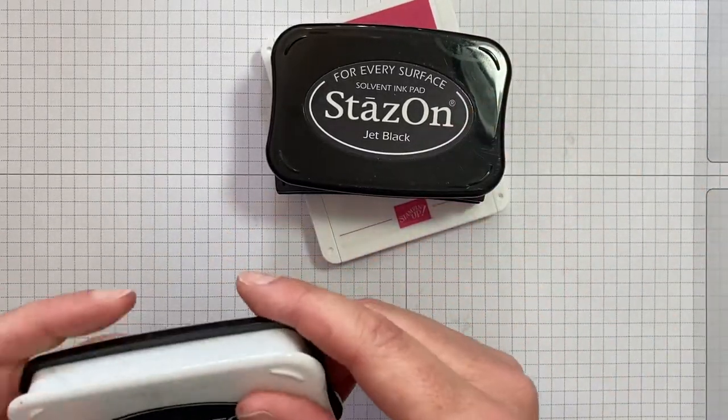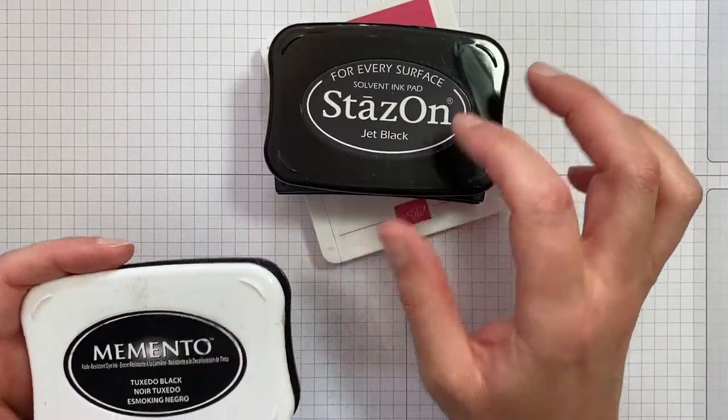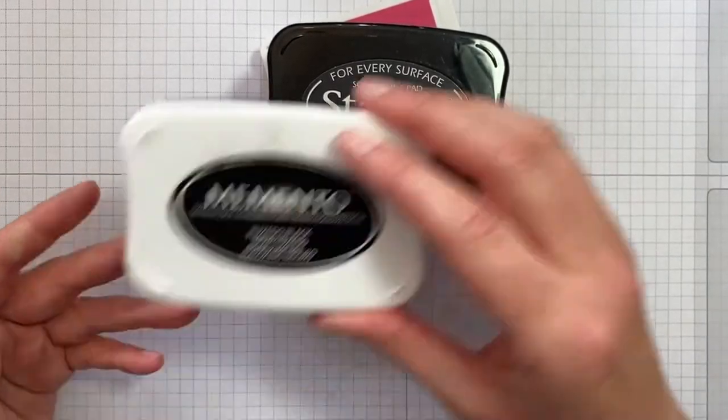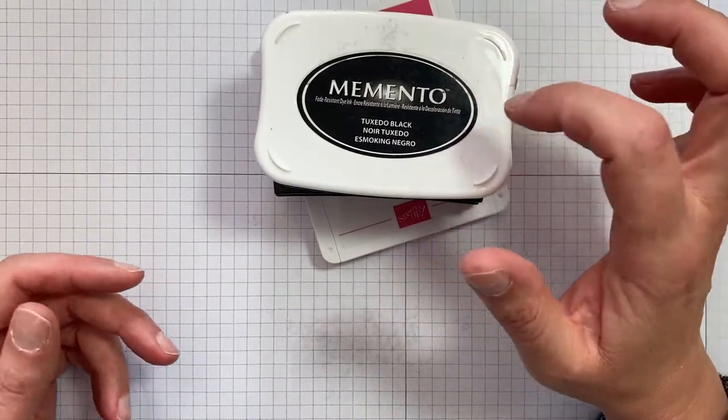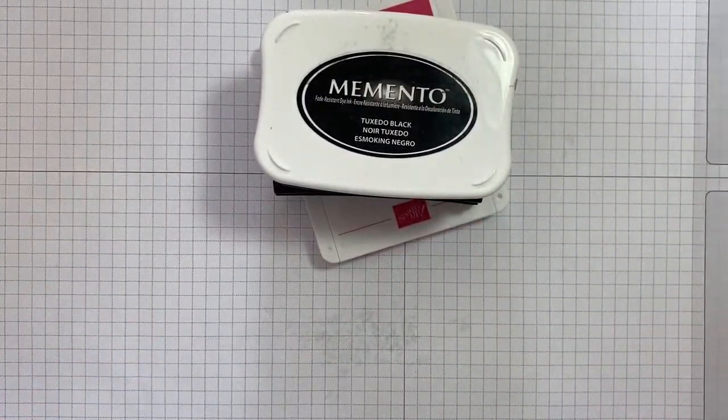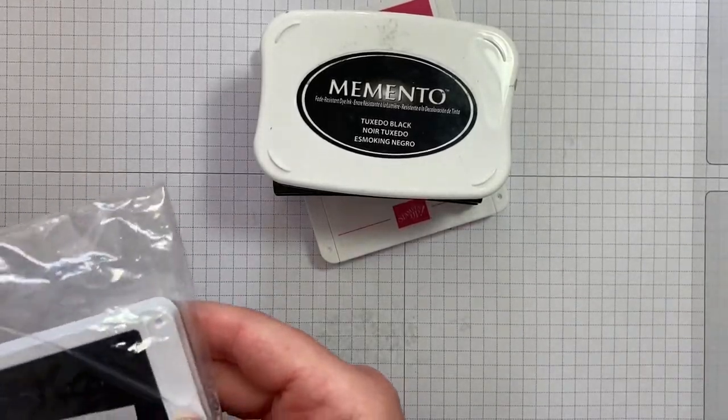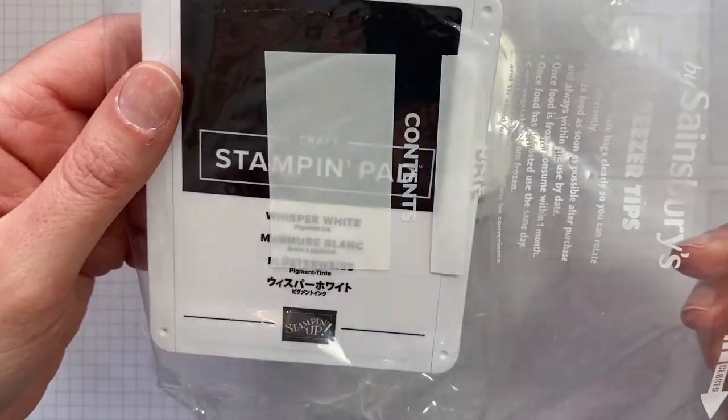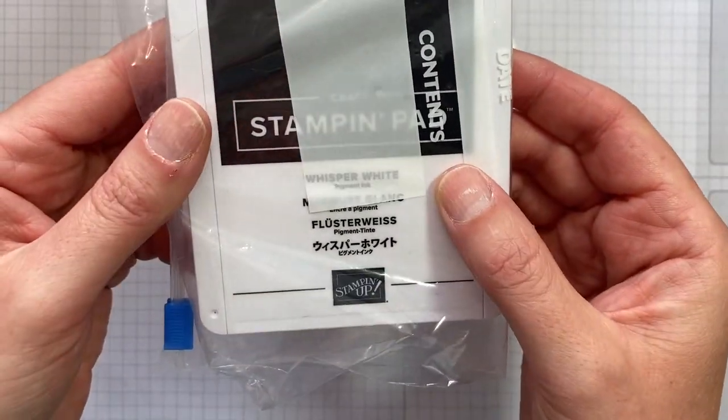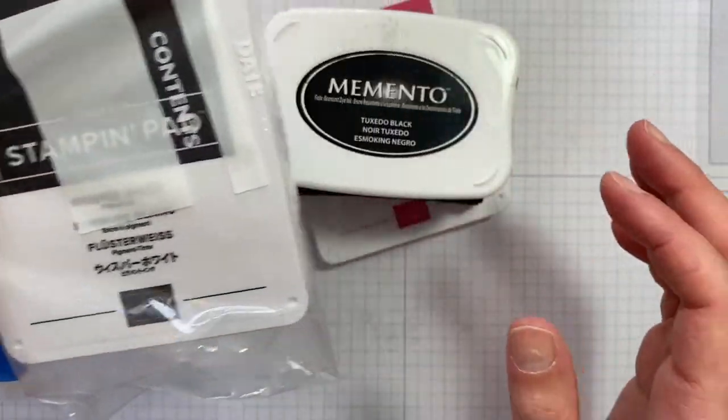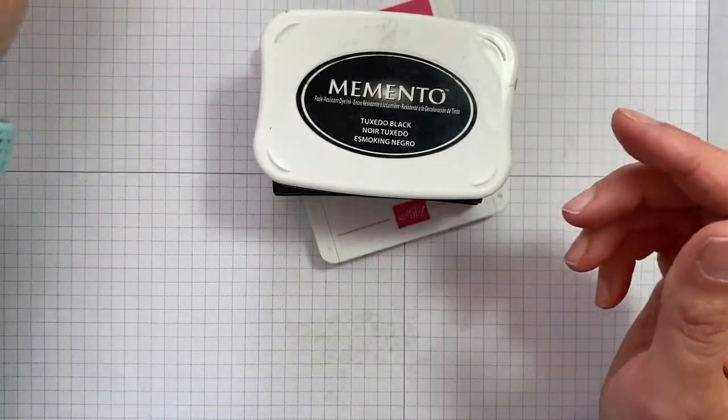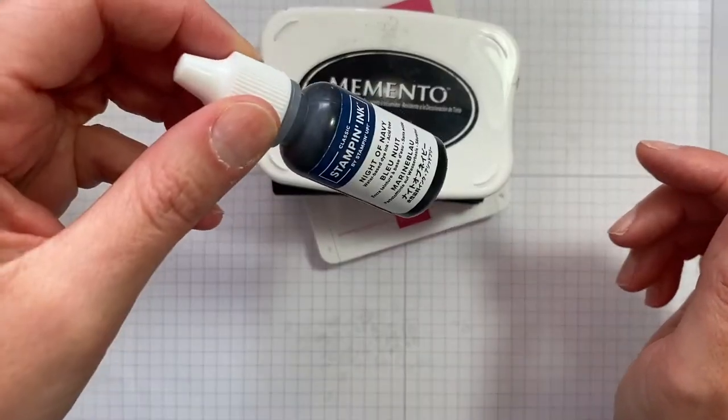Stazon, which is a solvent ink pad. We can use that for watercolor applications. Memento, great general stamp pad or for use with alcohol markers. And then in this little bag is the craft stamp pad. We're also going to have a look at Stampin' Write markers and reinkers.